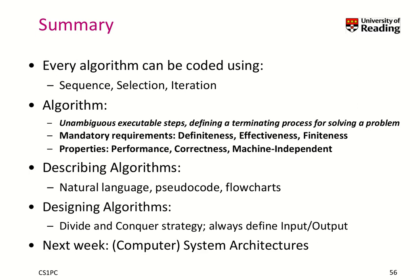To wrap up today's session: every algorithm can be coded using the three basic constructs — sequence, selection, and iteration. An algorithm is an unambiguous sequence of executable steps that define a terminating process for solving a problem. It has three mandatory requirements: definiteness, effectiveness, and finiteness, plus additional properties like performance aspects — it must be correct and should be machine independent. We have different ways of describing algorithms: natural language, pseudocode, or flowcharts. When designing an algorithm, we learned a couple of strategies — one was divide and conquer, breaking a complex problem into smaller problems. We should always clarify the input and output.